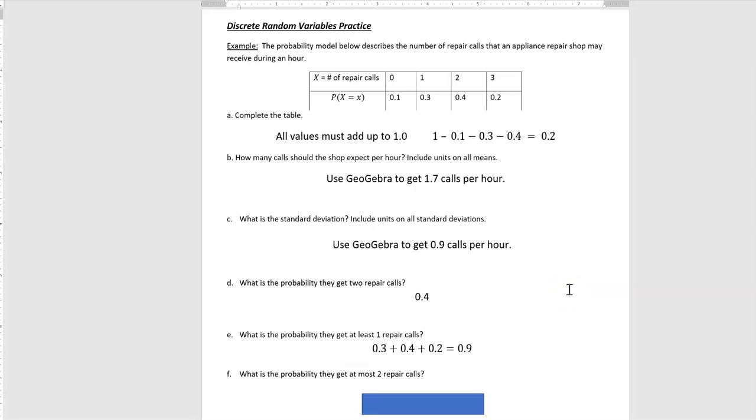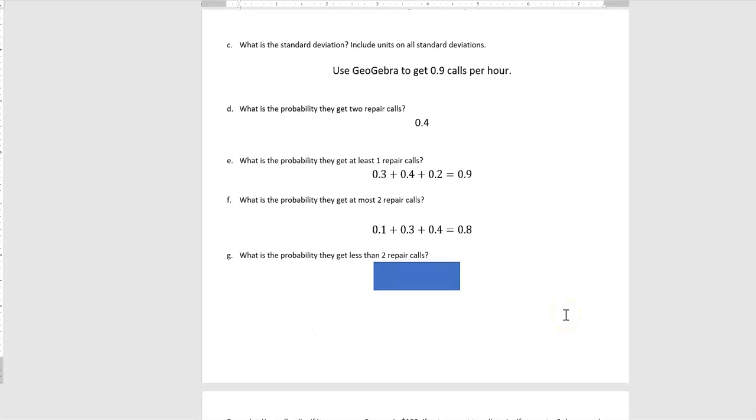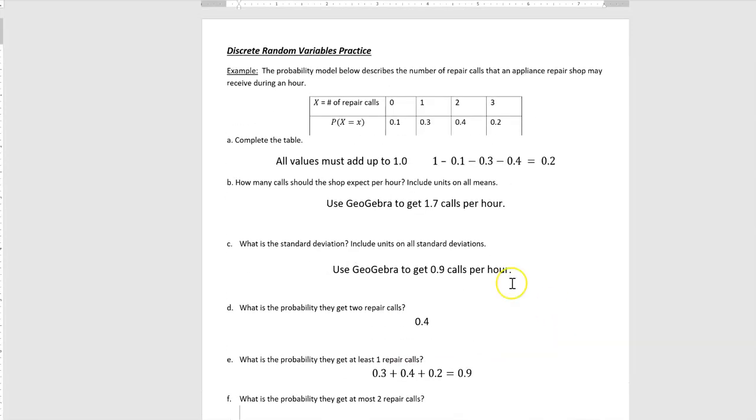What's the probability they get at most two? Well, at most means the most they could get is two, or they could get one or zero. So we would add these three together: the 0.1, 0.3, and 0.4. The most they can get is two repair calls. And finally, what's the probability they get less than two repair calls? So less than two means they don't get two, they get less than two, which is adding up the 0.1 and the 0.3 to get the less than two probability.